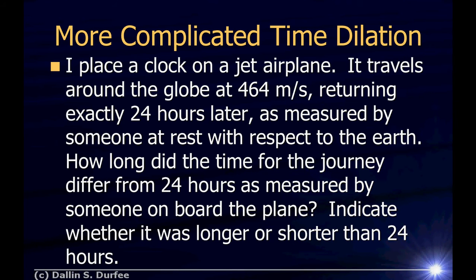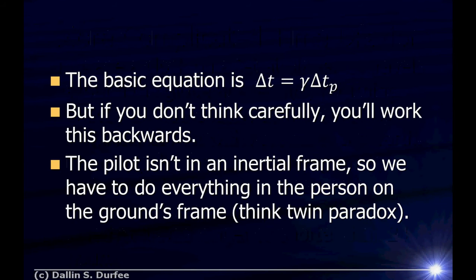Now for a more complicated time dilation problem. A clock is placed on a jet airplane traveling at 464 meters per second, returning exactly 24 hours later as measured by someone at rest with respect to the Earth. How much does the time for this journey differ from 24 hours as measured by someone on board? Remember that the pilot isn't in an inertial frame — he goes out and comes back. While the velocity magnitude is constant, the direction is changing, so the pilot is not in an inertial frame.